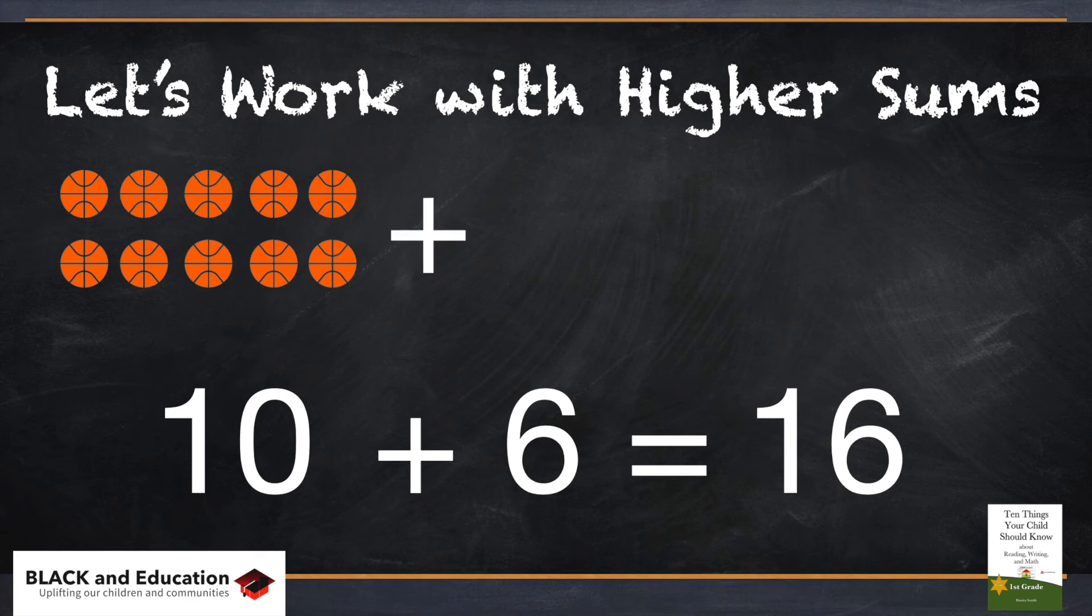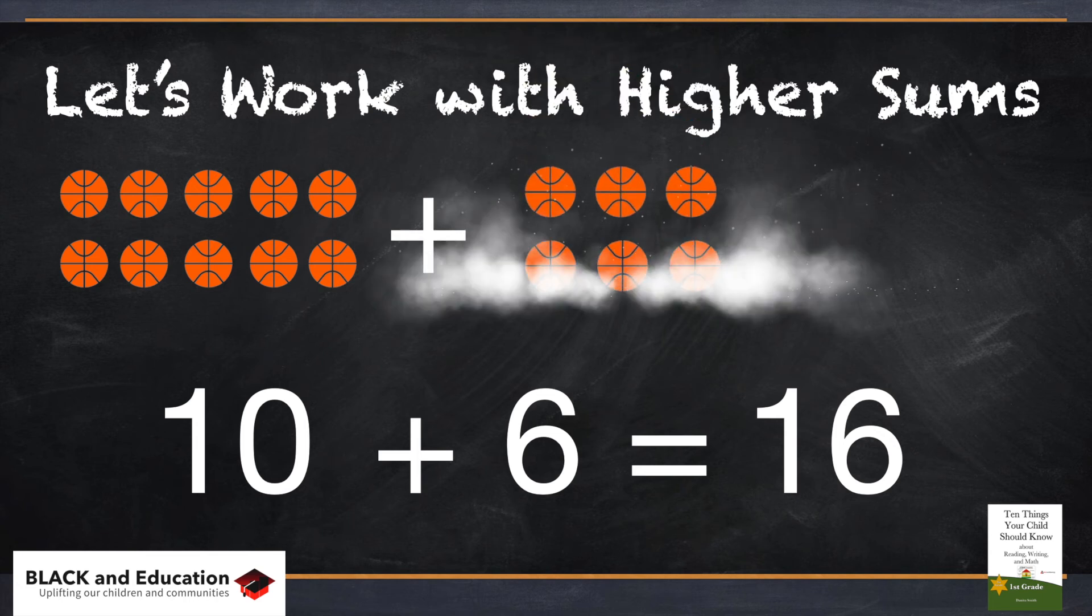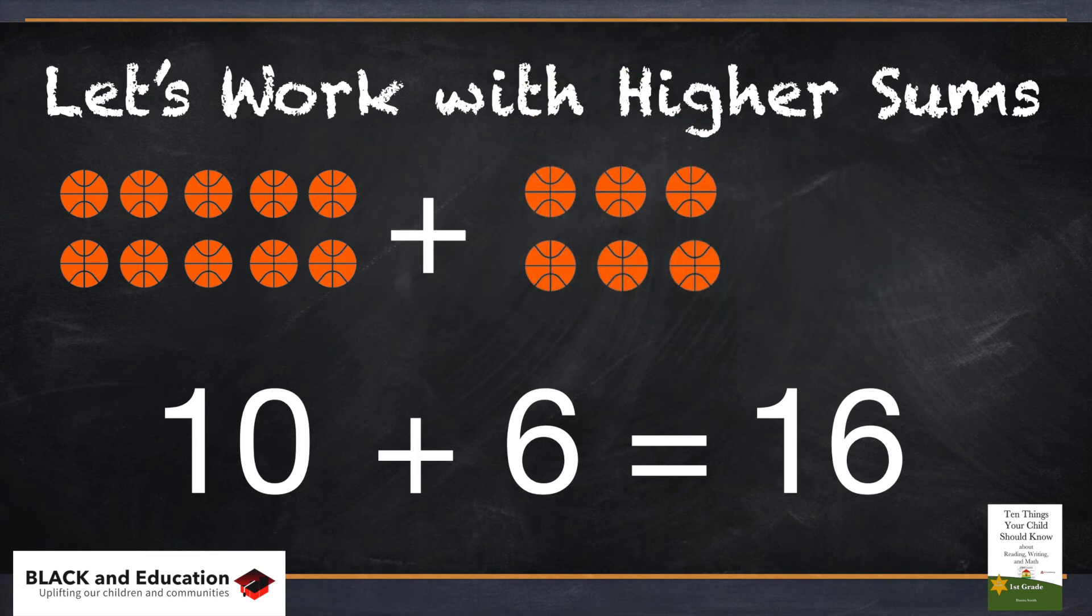And what we're going to do is we're going to add to the number of basketballs that we have available to us. And we add six to that number. So what that essentially is saying is we took a group of six plus a group of 10 and we were able to get 16.